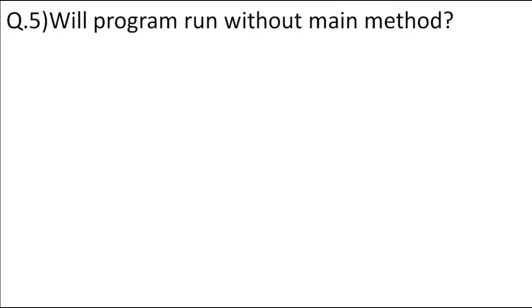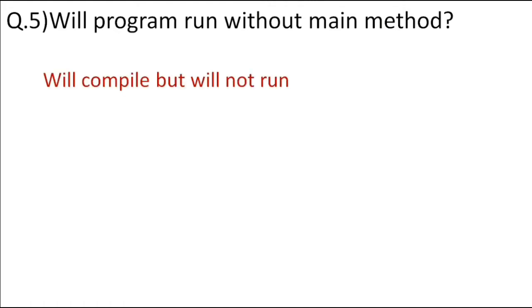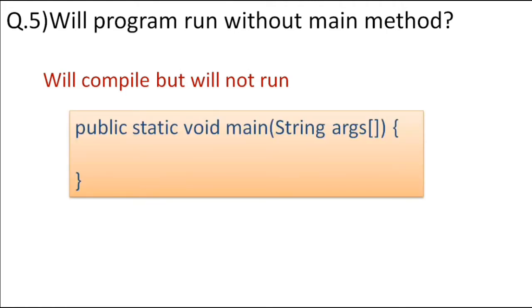Will a program run without a main method? The program will compile without a main method, but it won't run — at runtime it will throw an exception that the main method is not found. You need to have the main method with all the required keywords: public, static, void, and the String arguments. It is important to have this exact signature; otherwise your program won't run, although it will compile.